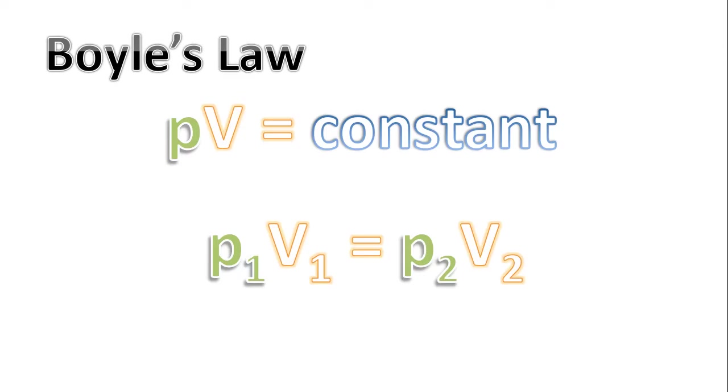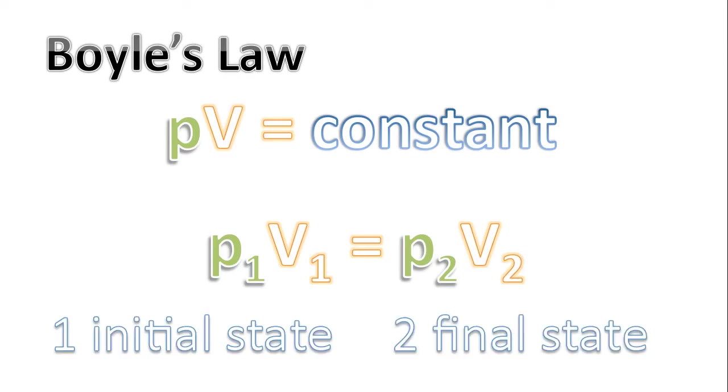In practice, we write the following: P1V1 equals P2V2. The 1 stands for initial state, and the 2 stands for final state.